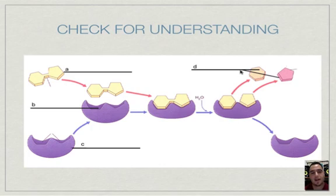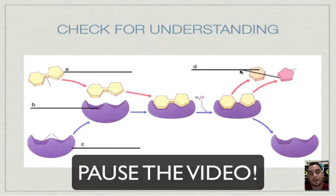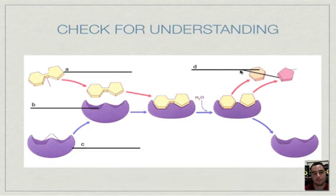Let's do a check for understanding. Again, what do you think A is? What do you think B is? C or D? Pause the video and try it out. Okay, so A is the substrate. B is the active site. C is the enzyme, right here. This one is the enzyme-substrate complex. And D are the products. And don't forget, the enzyme goes back to the same shape. So it could do the reaction again and again.